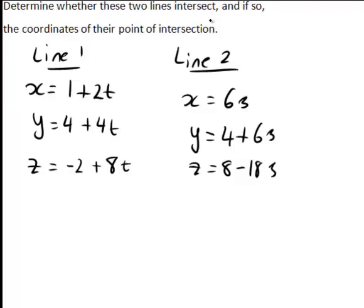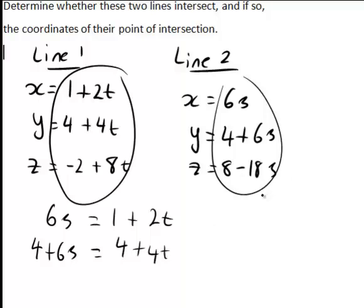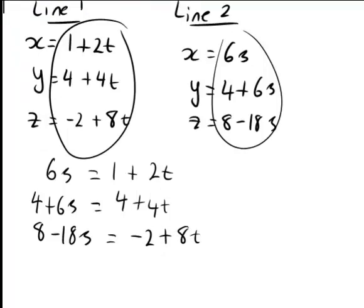If the lines do intersect, there must be some point where the x, y, and z values coincide for the two lines. That means 6s equals 1 plus 2t for the x-coordinates. Similarly, the y-coordinates must coincide, so 4 plus 6s equals 4 plus 4t. And matching up the z expressions, 8 minus 18s equals negative 2 plus 8t. We need to solve these three simultaneous equations in the two unknowns s and t. If these equations have a consistent solution, the lines intersect; if not, they do not intersect.